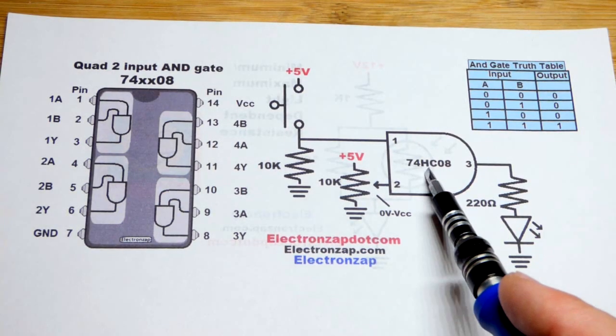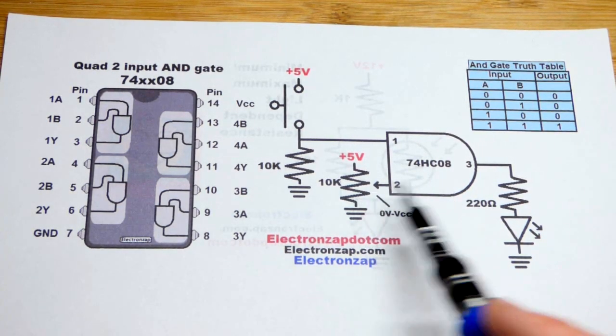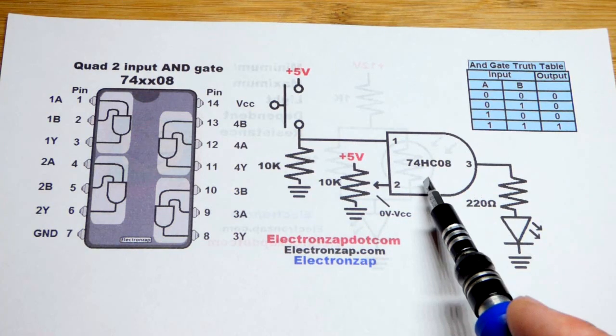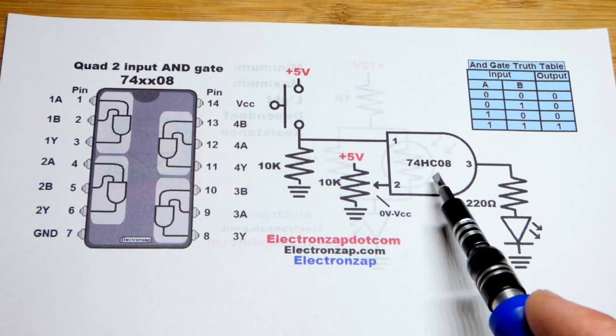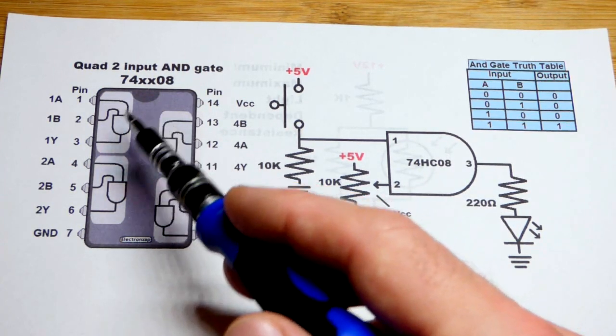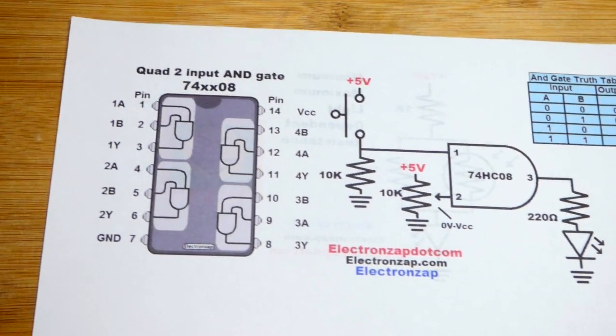Now in this video we're going to make a simple demonstration AND gate circuit. In this video series we used the switch and transistor before. Now we're just going to go right to the integrated circuit which is the best option.